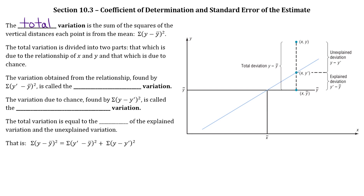The variation obtained from the relationship is called the explained variation — mathematically that's sigma of (y-prime minus y-bar) squared. The variation that's due to chance is called the unexplained variation, which is sigma of (y minus y-prime) squared. The total variation is equal to the sum of the explained variation and the unexplained variation.